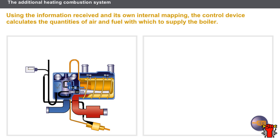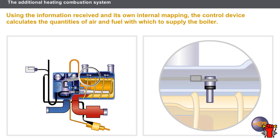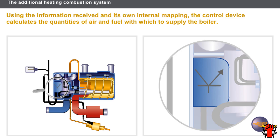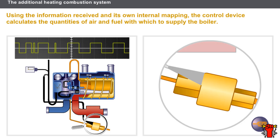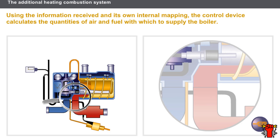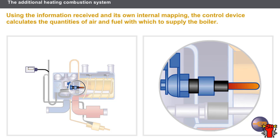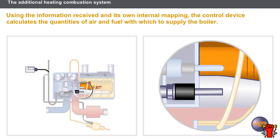Let us look in detail at the actuator control that enables the system to start. The coolant temperature sensor informs the control device of the engine temperature on starting; the switch informs the control device of the air temperature. The device controls the supply frequency of the pump motor; the pump then brings in the quantity of fuel that corresponds with the production of heat required. The device controls air blowing, comprising the electric motor and the fan, which brings in the air required for combustion. The device controls the incandescent plug supply, which primes the combustion at the start of each heating cycle. The flame detector informs the control device that combustion is effective.